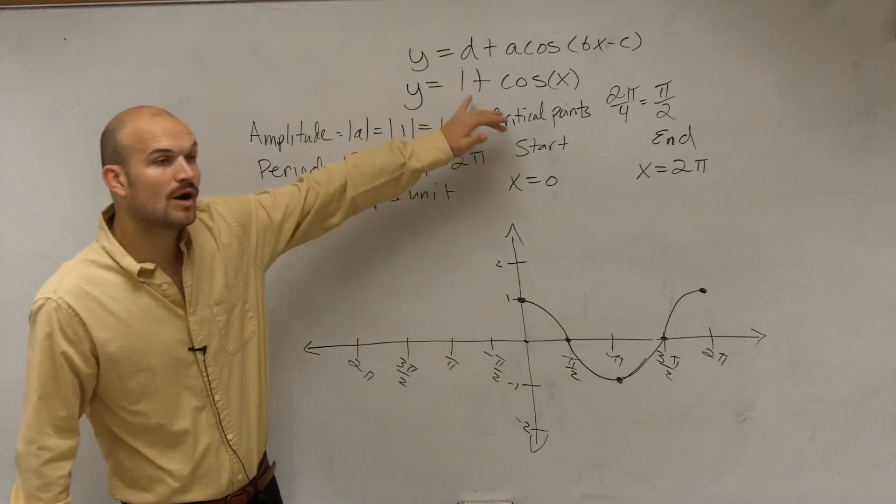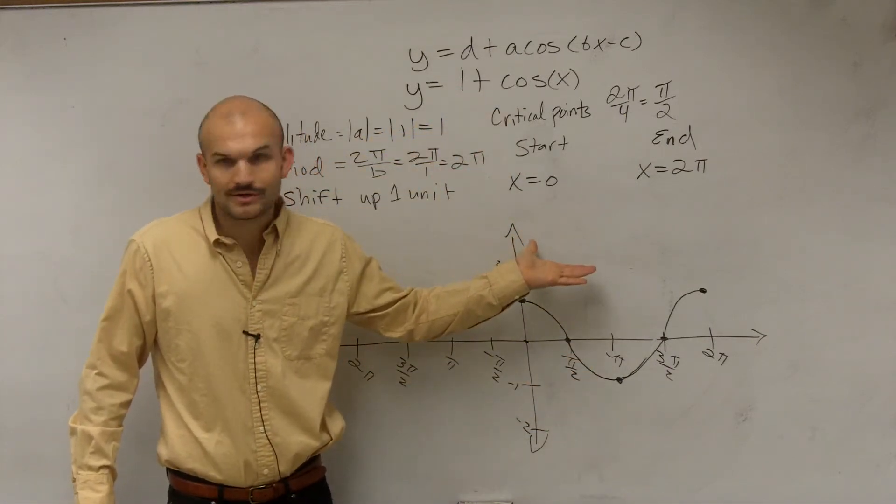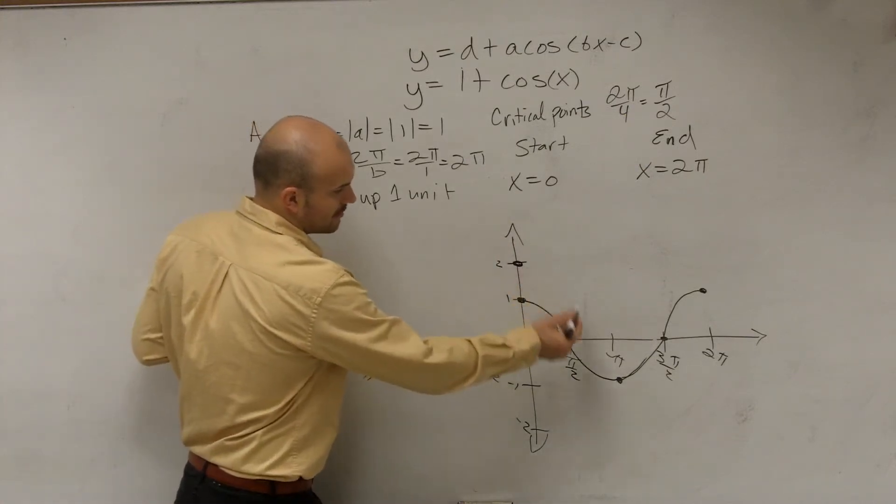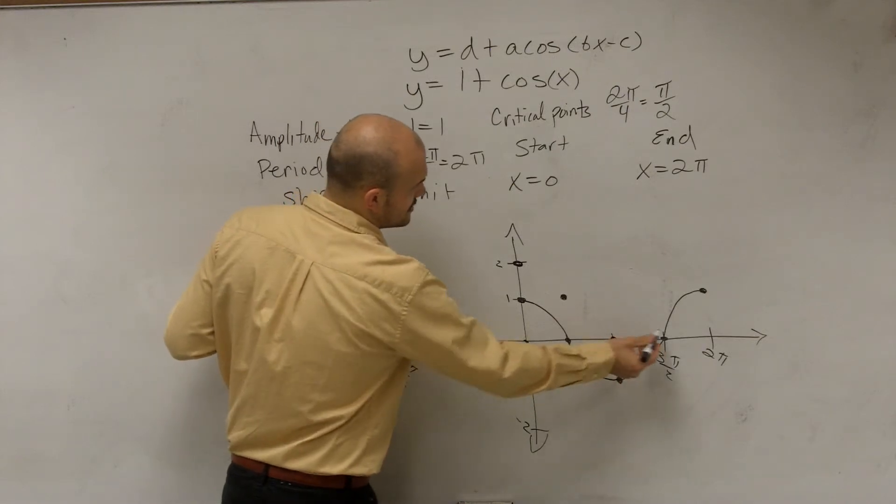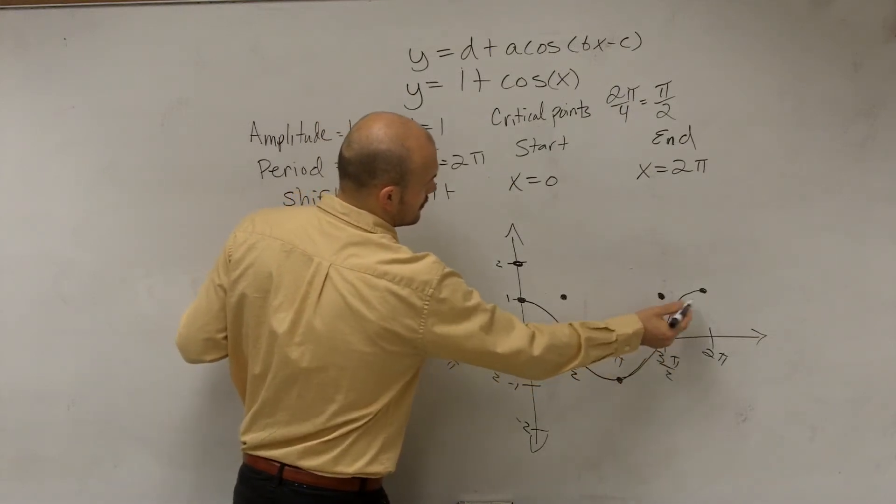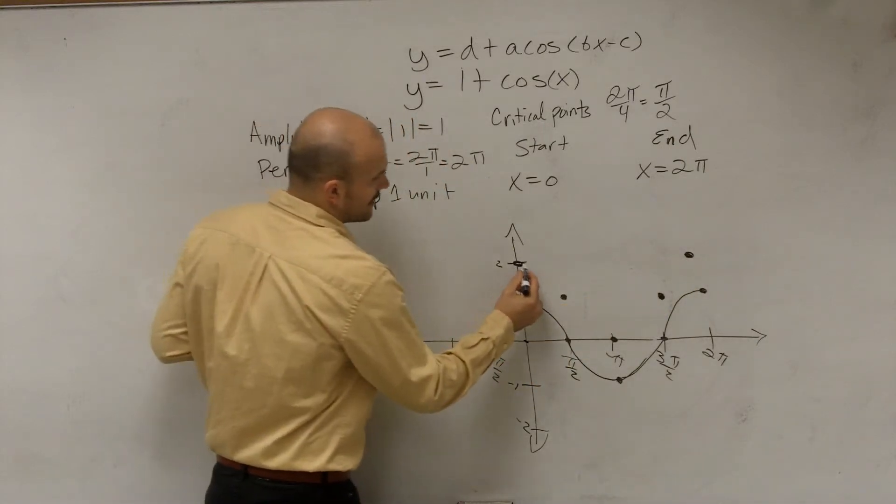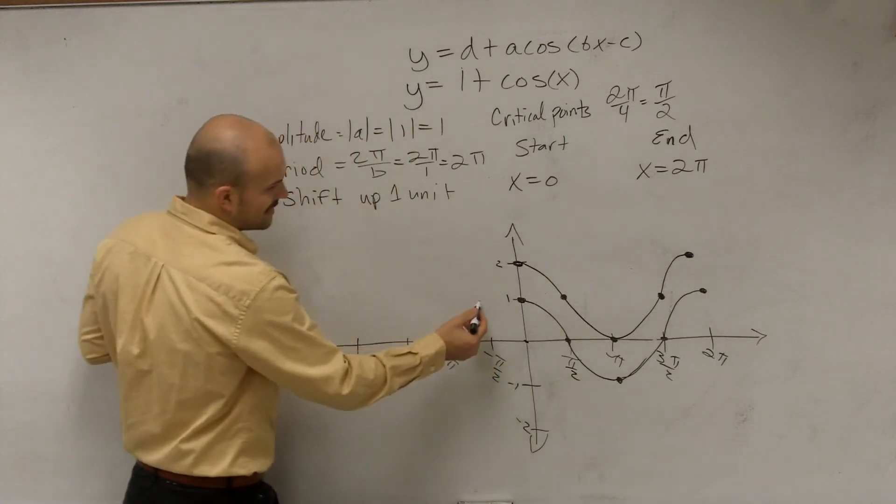However, this 1 is now going to tell us to shift this graph up one unit, all right? So that means every point now is going to be shifted up a unit. Okay, so really my graph is going to look something like this. And then I can just kind of continue that.